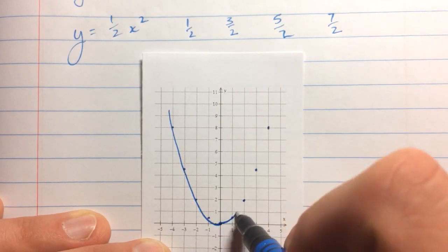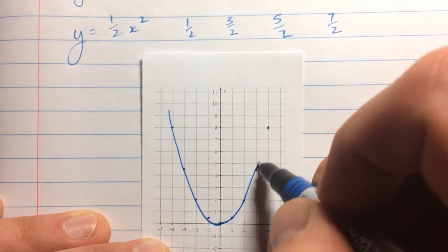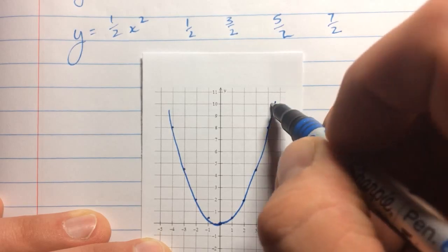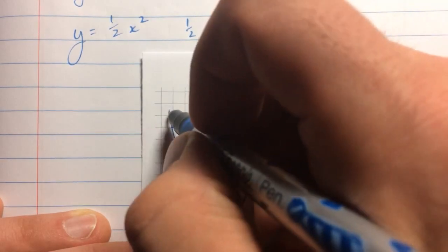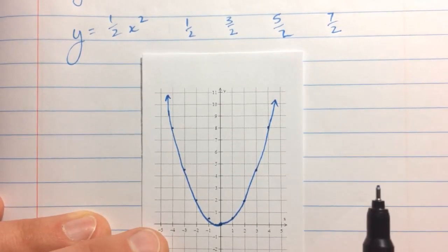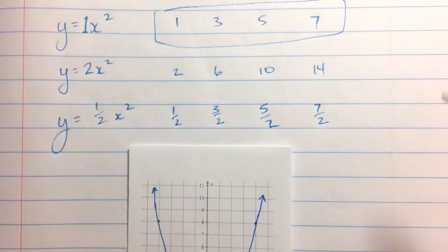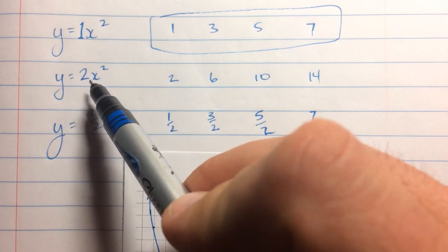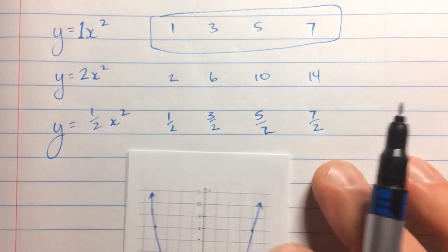Remember coming in smooth at the bottom — not pointy. And don't flare out like a tulip at the end; these continue up steeper and steeper as you go. So the pattern: the original pattern is 1, 3, 5, 7, etc. We multiply by the A value that's out front.